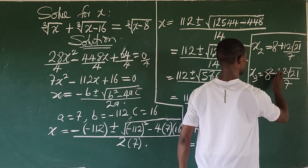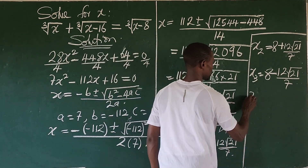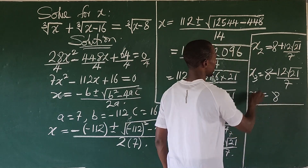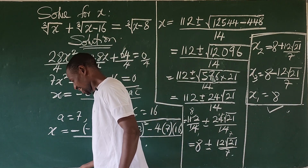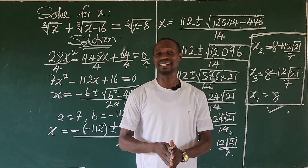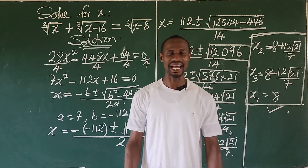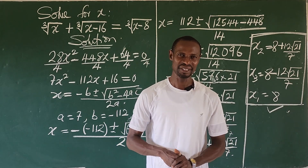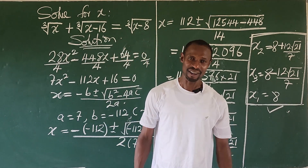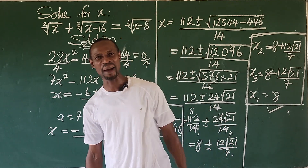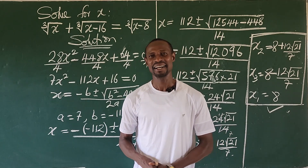So these are the three roots to this wonderful math challenge: x₁ equals 8, x₂ equals (8 + 12√21)/7, and x₃ equals (8 minus 12√21)/7. This brings us to the end of this video tutorial. If you learned something, give the video a thumbs up and don't forget to subscribe. This is Jigs Animal from Online Math TV — we love you all. Thanks for being here, and see you in our next class!